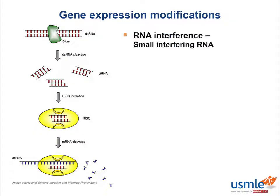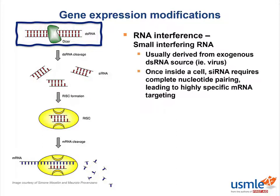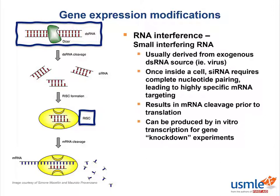Small interfering RNA is usually derived from an exogenous double-stranded RNA source, like a virus. Once inside a cell, small interfering RNA requires complete nucleotide pairing — not broad or inexact like microRNAs — leading to highly specific mRNA targeting. This results in mRNA cleavage prior to translation. Small interfering RNAs can be produced by in vitro transcription for gene knockdown experiments. You may encounter the term RISC — RNA-induced silencing complex — which can refer to using either microRNA or small interfering RNA.